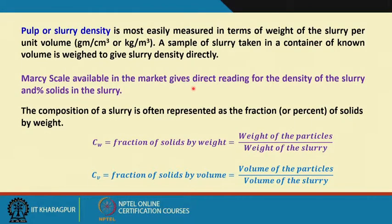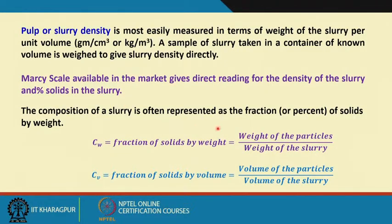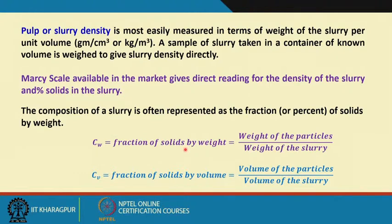The Marcy scale gives direct reading of the density of the slurry and also gives you the weight percent solids in the slurry — that is, how much solid and how much water is there. The composition of slurry is often represented as the fraction or percent of solids by weight. For example, if I have a slurry density of 1500 kg per meter cube where the fluid is water, how much solid is there by weight?